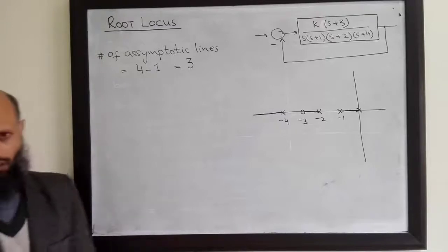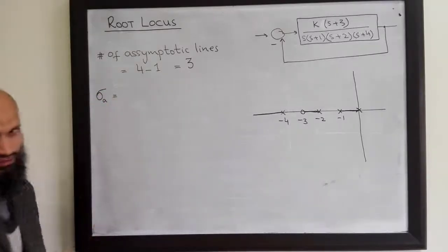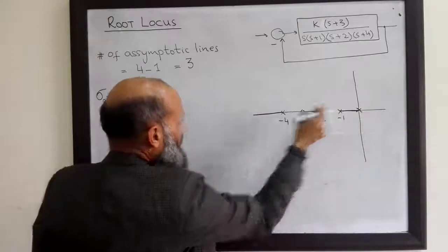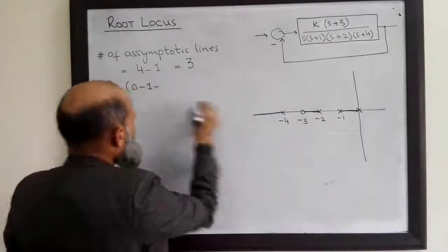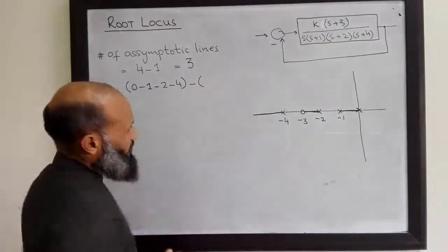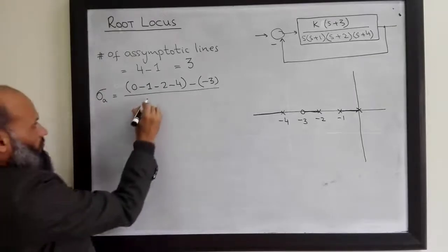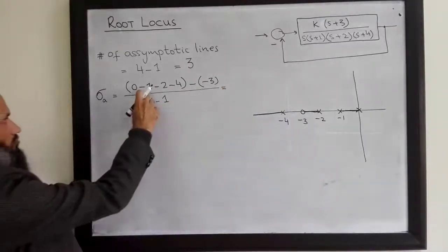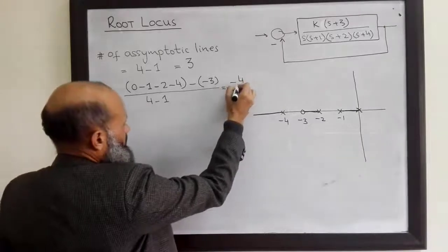To draw a line we need a point on that line and its slope. The center of the asymptotic lines is: sum of finite poles — which are 0, -1, -2, -4 — minus sum of finite zeros — which is -3 — divided by the number of finite poles (4) minus the number of finite zeros (1). This gives (-7) - (-3) divided by 3, which equals -4/3.